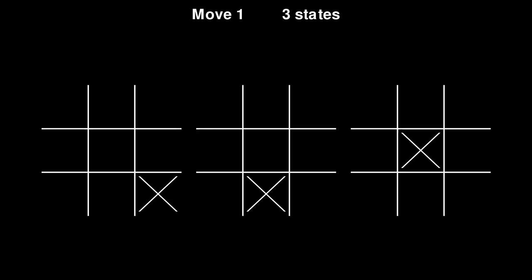So, to be concrete about it, at the beginning there is one possible state of the board. Empty. After X's first move, there are three possible states of the board, depending on whether they play corner, edge, or center. All other possible states are just symmetrical copies.